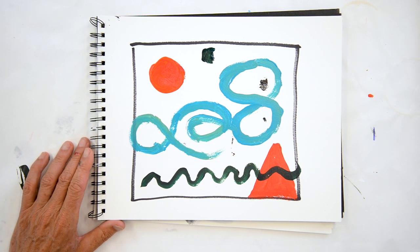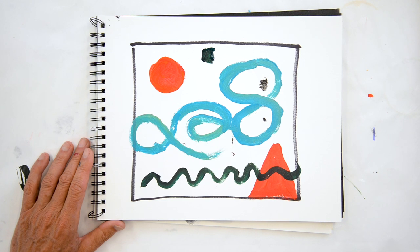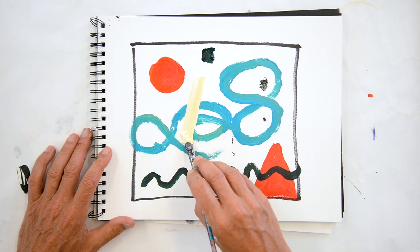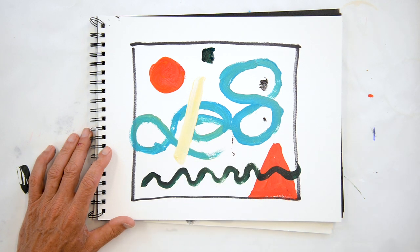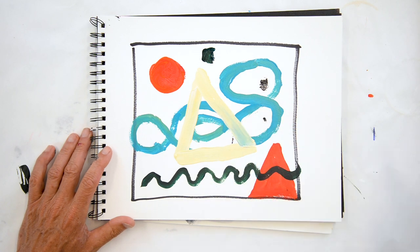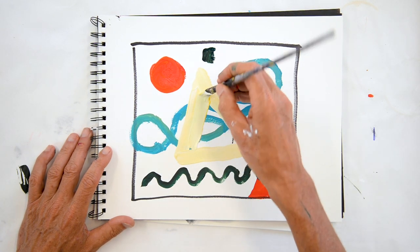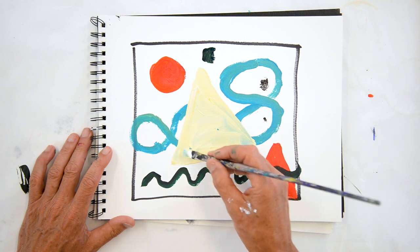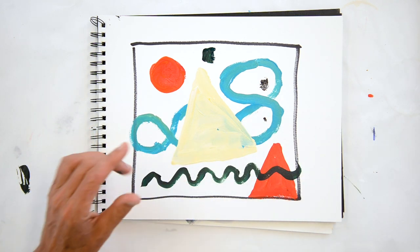But if I come in with another shape, let's say I have this kind of light yellow shape, and I put something in front of something else, this becomes kind of a whole new thing. Because now there's things behind things.